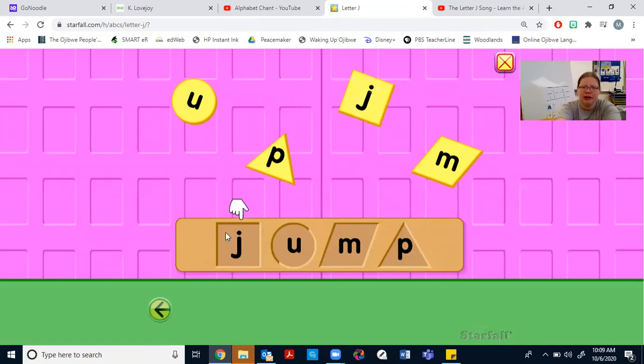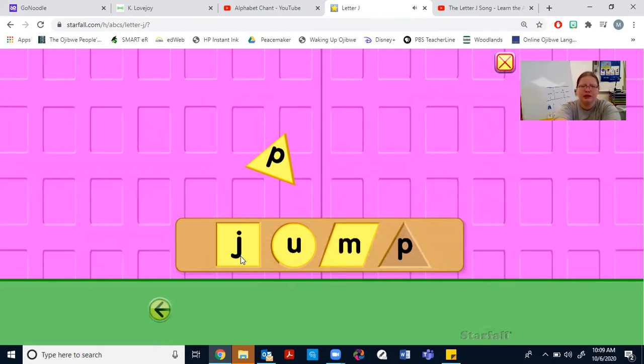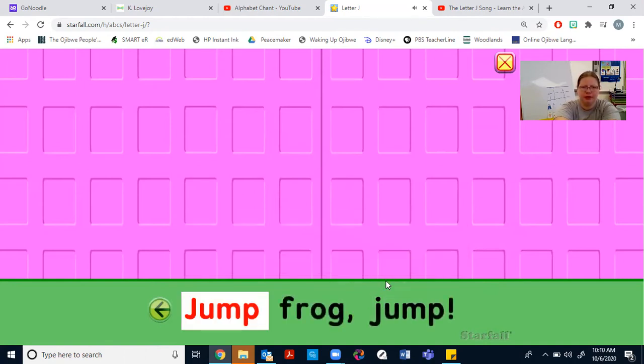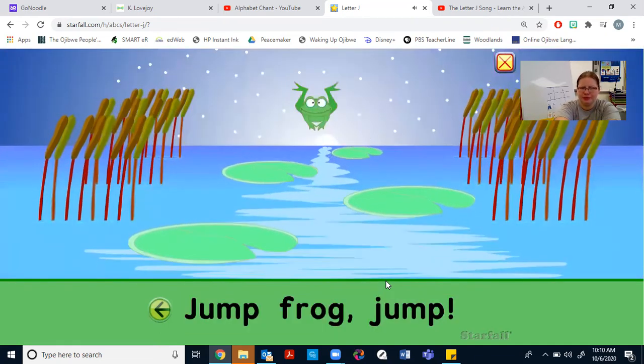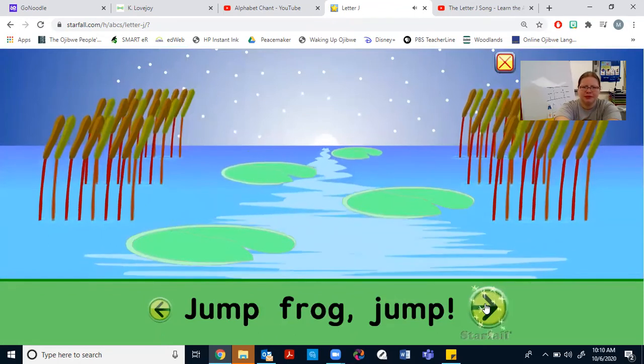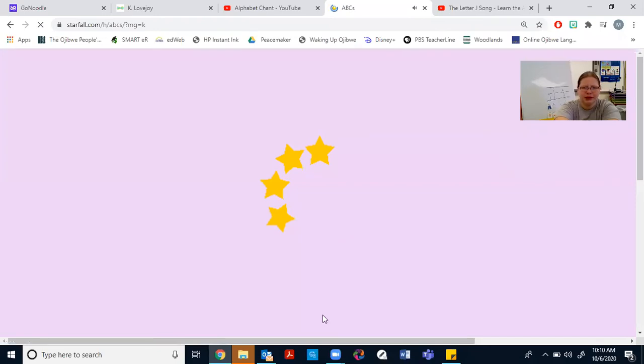We have a secret word here. So the first letter I'm going to find is the Juh, and I'm going to bring it over. Juh. And then I'm going to go to the next letter. This letter is the letter U, and it makes the uh sound. Uh. We have Juh, uh. Our next letter is M. M, M. So we have Juh, uh, M. Let's see our last letter. Puh. Juh. Uh. Mm. Puh. Juh. Uh. Mm. Jump. Jump, frog, jump. Nice job.